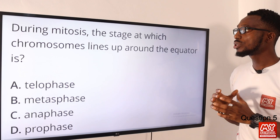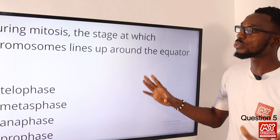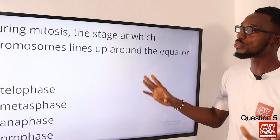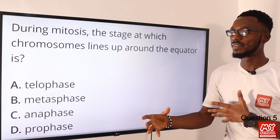Question five: during meiosis, the stage at which chromosomes line up around the equator is what? That particular stage is correctly referred to as metaphase — we can have early metaphase and late metaphase. The correct option is option B.